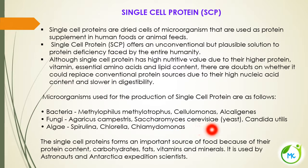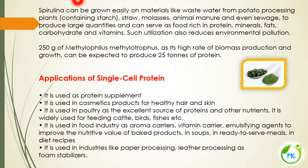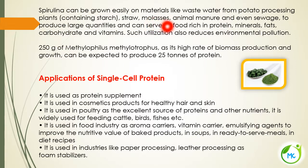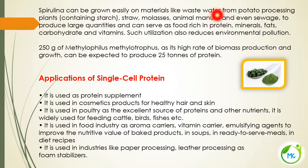Single cell protein forms an important source of food because of its protein content, carbohydrates, fats, vitamins and minerals. It is used by astronauts and Antarctica expedition scientists. Spirulina, an algae, can be easily grown on raw materials such as wastewater from potato processing plants, straw, molasses (the leftover after extraction of sugar from sugarcane), animal manure and even sewage, to produce large quantities. It can serve as food rich in protein, minerals, fats, carbohydrates and vitamins. Such utilization of waste also helps reduce environmental pollution.